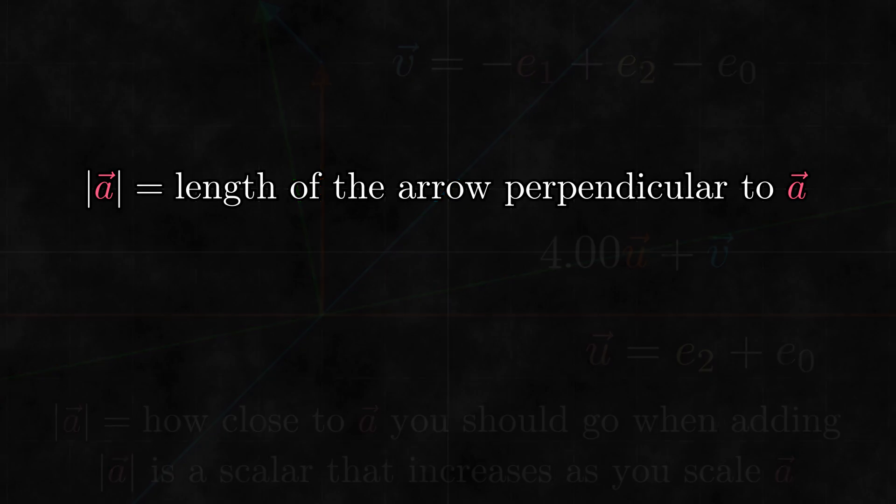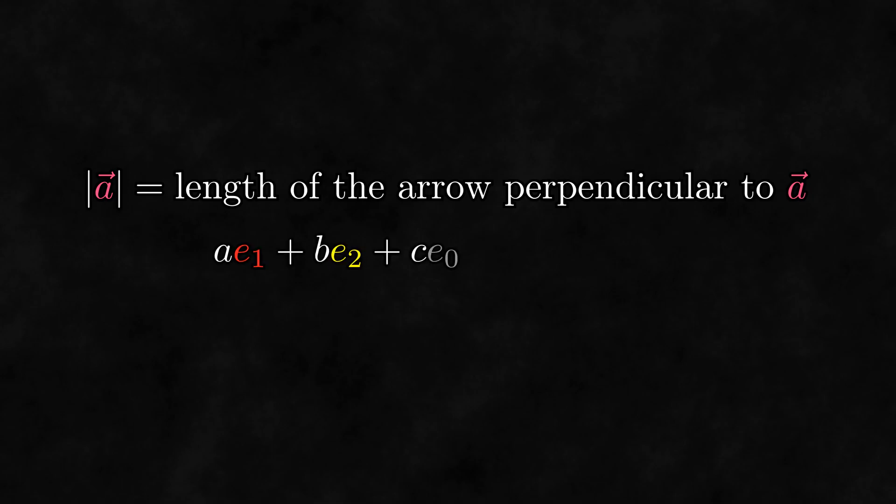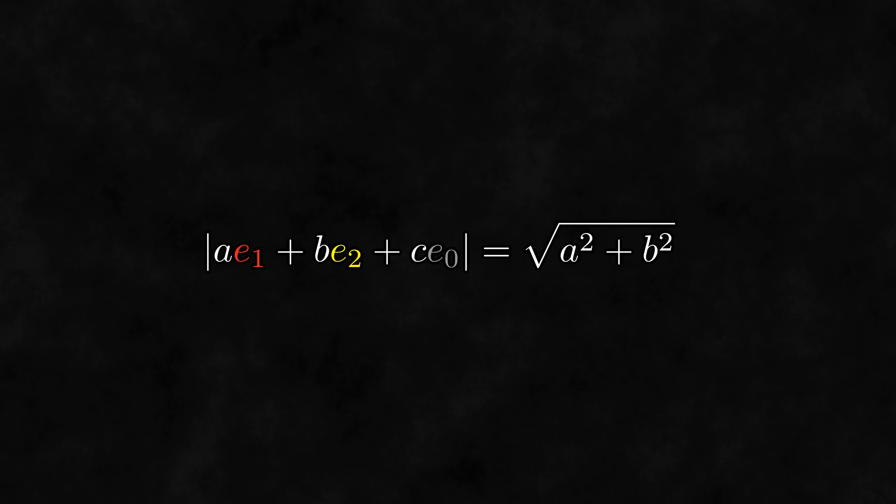With this, we finally get a formula for the magnitude of a line. Given an arbitrary line with this expression, its magnitude is given by the length of the arrow with the same first two components. By the Pythagorean theorem, we already know what this length is. Thus, we now have an explicit formula for the magnitude of a line.